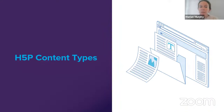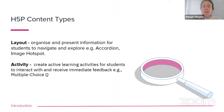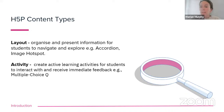So what are the H5P content types? They're categorized into layout content types, where you lay out and present material to your students to navigate and explore. The two layout content types I'm going to look at today are the accordion and the image hotspot. Then you've got activity content types, where you create active learning activities for students that they can interact with and, in certain circumstances, receive feedback. The one I'm going to demonstrate there is the multiple choice question.